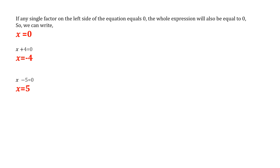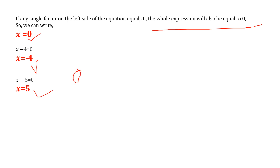We know that if any single factor on the left side of the equation equals zero, the whole expression will equal zero. So x equals 0, x plus 4 equals 0 giving x equals minus 4, and x minus 5 equals 0 giving x equals 5. Our three values of x are 0, minus 4, and 5.